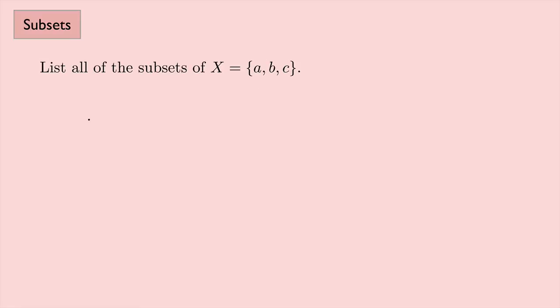So we have three elements here. What about looking at all of the subsets that have three elements? So that would just be the set X itself, A, B, and C. And we saw before that any set is a subset of itself.